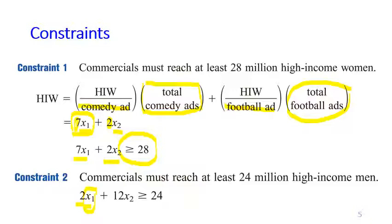For each football ad, we get the attention of 12 million high-income men, and then we put as many as X2 football ads. And the total of this must be greater than or equal to 24, because at least means that we must reach greater than or equal to 24.